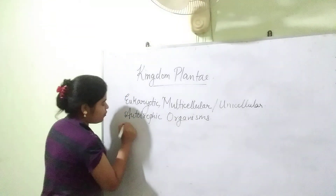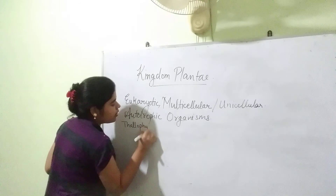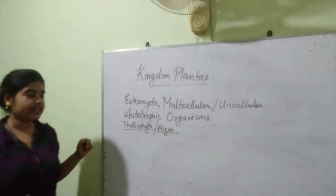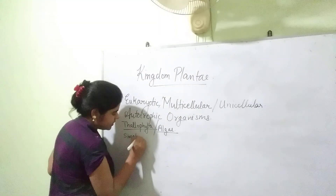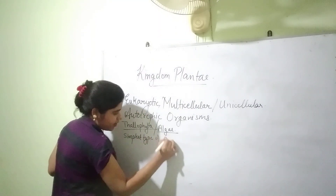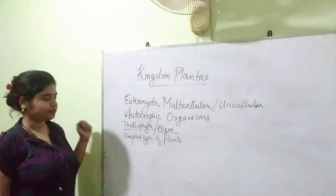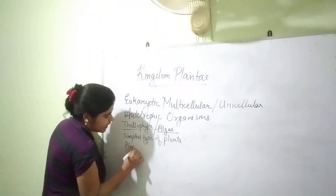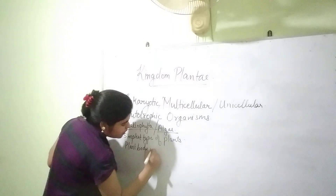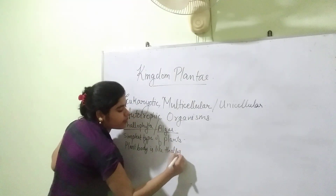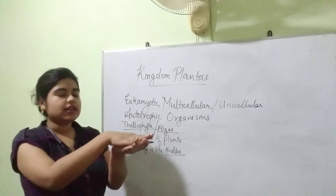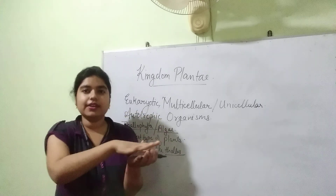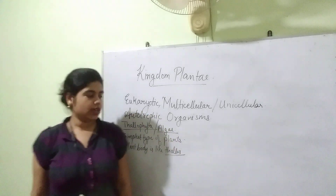Thallophyta has derived from the word thallus — their plant body is like a thallus. What is a thallus? It is a simple aggregate structure not differentiated into roots, stems, or leaves. Just a green colored mass is called thallus. So the plant body is like thallus.